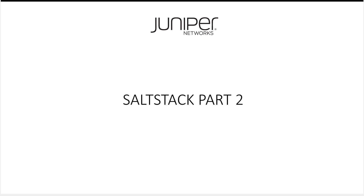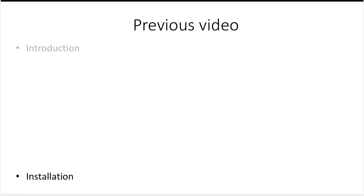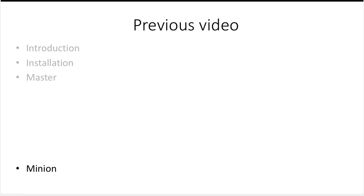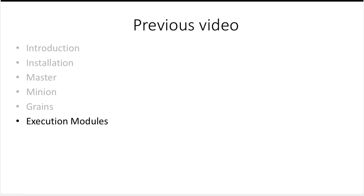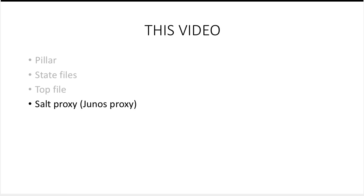Hello, welcome to the second part of the SaltStack video. In the first part, we had an introduction to SaltStack. We looked at its installation process and we explored a few of the salt components such as the salt master, the controlling system, the salt minion, the devices which are controlled by the salt master, grains, the pieces of information about the minion collected by the master, and execution modules, commands executed by the user on the salt minion via the master command line. In this video, we look at a few more salt components such as pillar, state files, top file, and salt proxy with focus on Junos proxy.